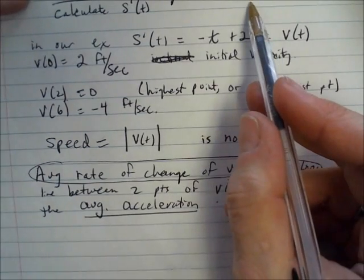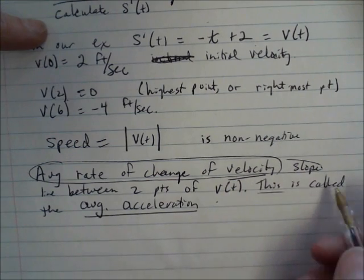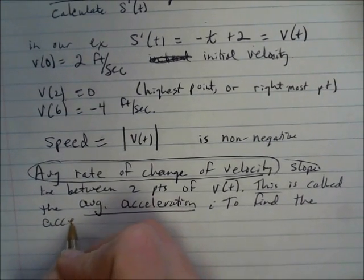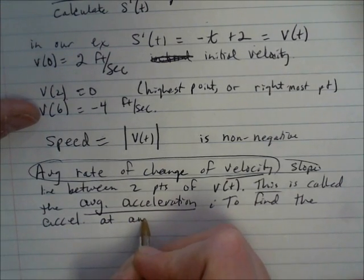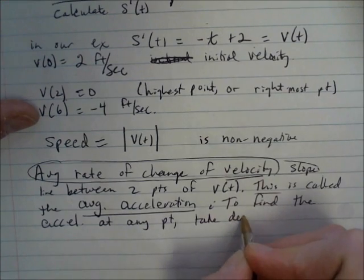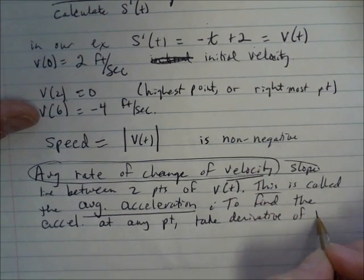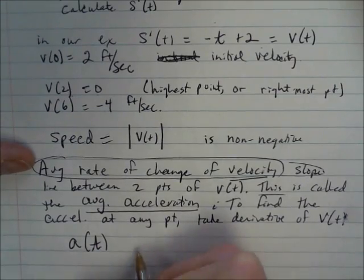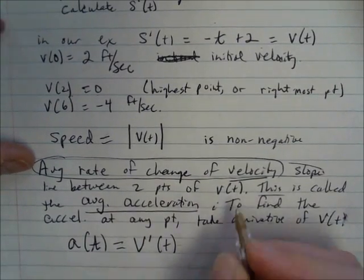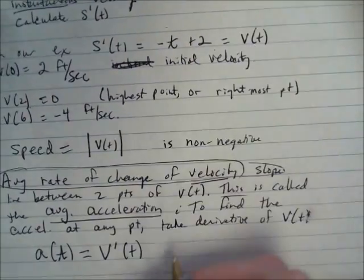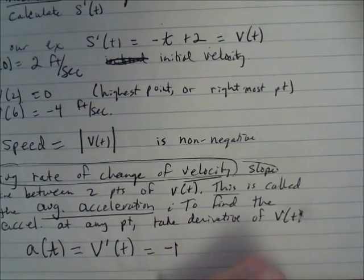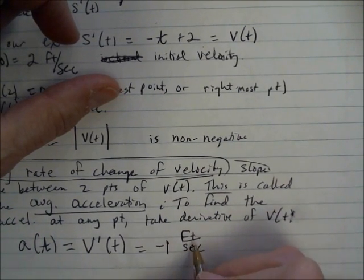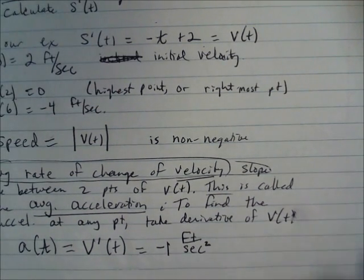If you want to find an instantaneous acceleration, you find the derivative of the velocity function. The acceleration, a of t, is equal to v prime of t. In our example, the derivative of the velocity function is just equal to negative 1, so this has a constant acceleration of negative 1. The units are feet per second squared.